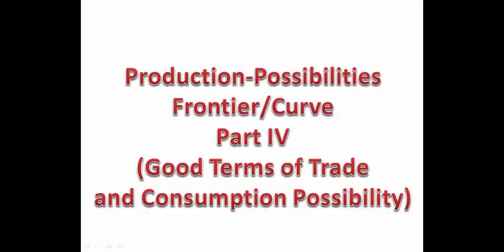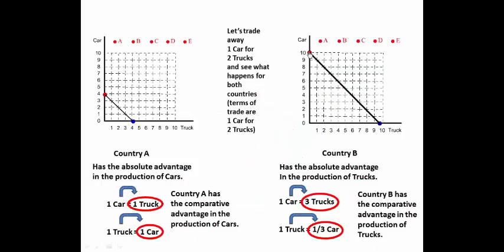This is Production Possibilities Frontier Part 4: Terms of Trade and Consumption Possibilities. From our previous discussion, we had a production possibilities curve for country B and one for country A. Country A has a comparative advantage in cars and should produce all the cars, while country B has a comparative advantage in trucks and should produce all the trucks.